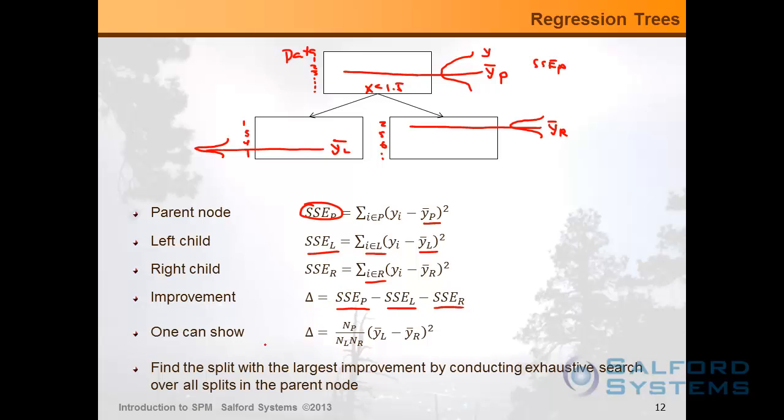Mathematically, it's always guaranteed to be positive just because of the nature of these sums. What's more interesting, though, is that you can also show that the same improvement can be simply calculated as a scaled squared difference of mean on the left and mean on the right. So you don't even have to worry about all of those individual sum of squares. All you need to do is calculate the mean on the left, mean on the right, then take the difference, square it, and normalize by the number of records in the parent node, number of records on the left partition, number of records on the right partition.